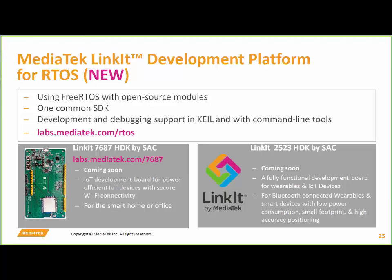The MT2523 HDK is much more focused on wearables and mobile IoT devices. It has dual-mode Bluetooth, very low power consumption, and a very small footprint. The GNSS solution gives you higher accuracy if that's the version you require. The MT7687 is for home automation and similar applications. Again, a focus on power efficiency — even though you may have this plugged into the mains, it's still worth being power efficient. And it has secure Wi-Fi with security engines as well.